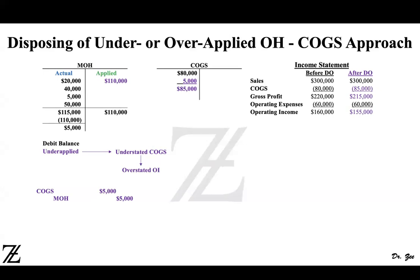We use the cost of goods sold write-off approach when the overapplied or underapplied overhead is not significant. If it's not a significant amount, it's an easy approach to follow — you can just close it to cost of goods sold.